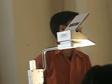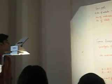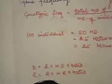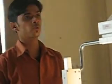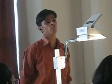Next is genotypic frequency. In genotypic frequency, we calculate the total number of a particular allele divided by the number of individuals. For example, if we have 100 individuals — 50 homozygous dominant, 25 heterozygous dominant, and 25 homozygous recessive — the dominant genotypic frequency is calculated as (2×50 + 25) divided by total individuals, giving 1.25. The recessive genotypic frequency is calculated as (25 + 2×25) divided by 100, giving 0.75.